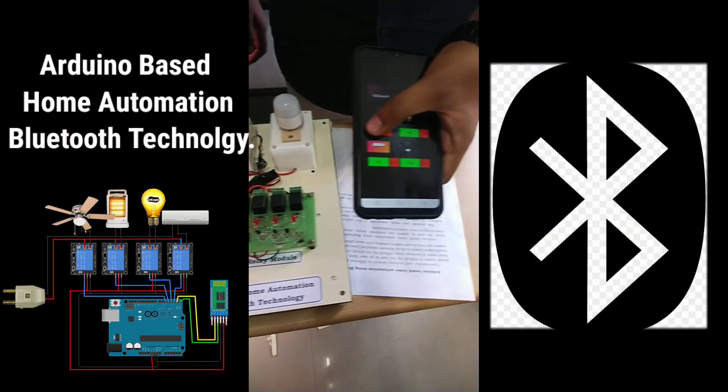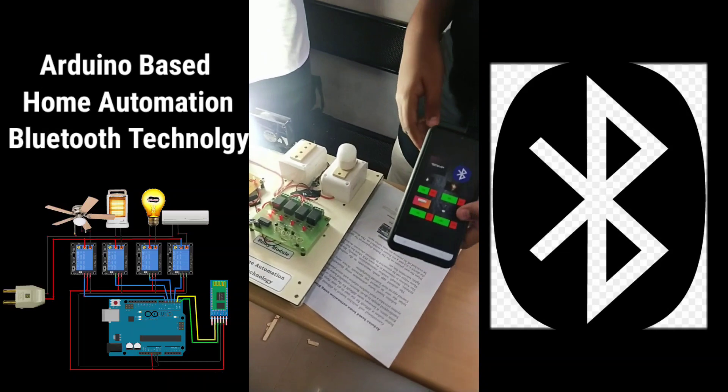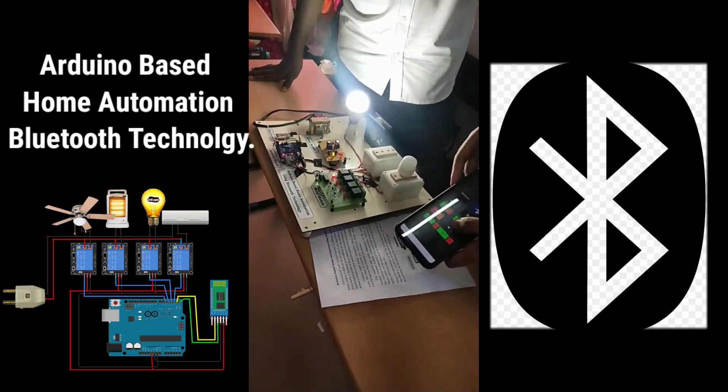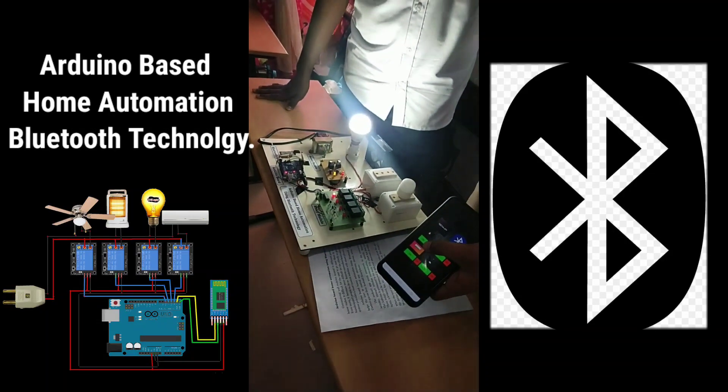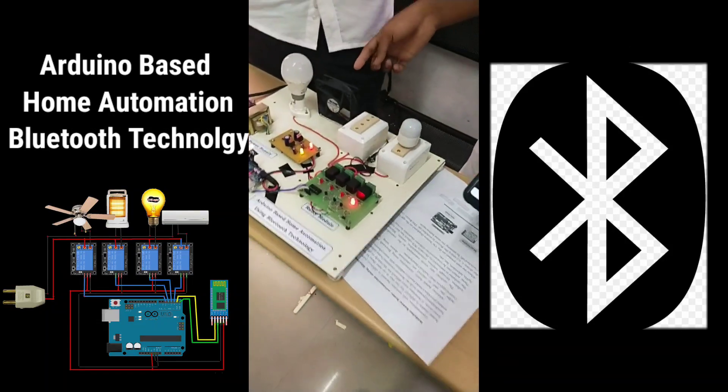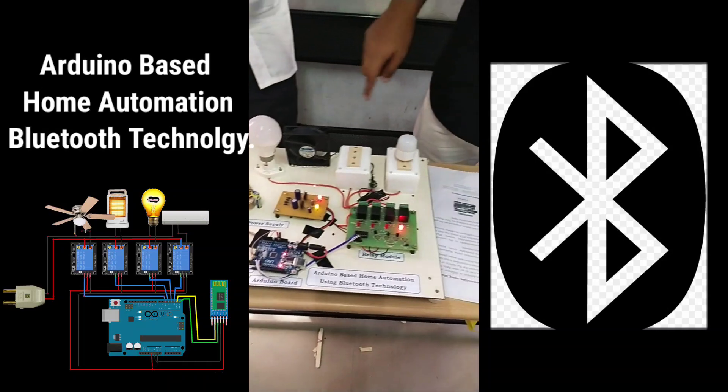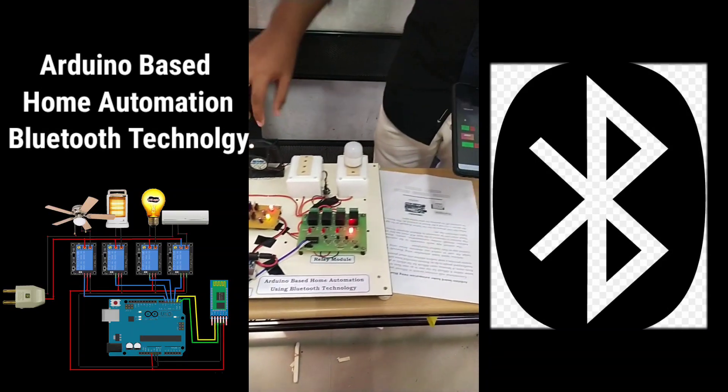Here is an Arduino-based home automation Bluetooth technology used to turn on the fan, light, etc. Here can you see they are switching on the light with the help of their app in their phone installed? Just check how they are operating.